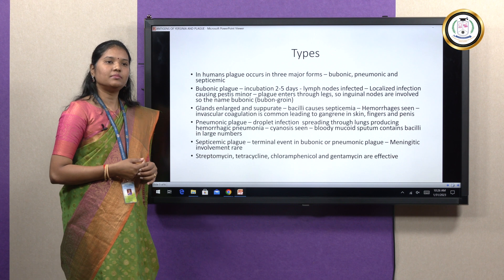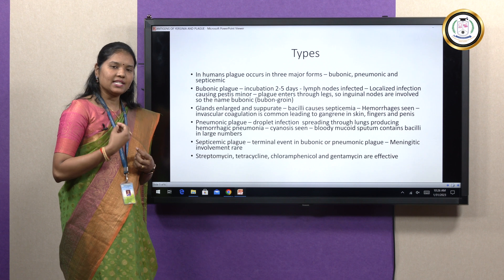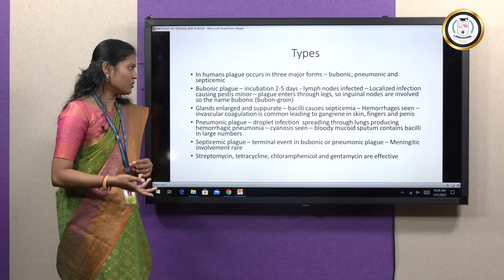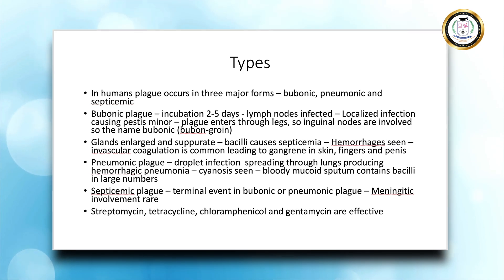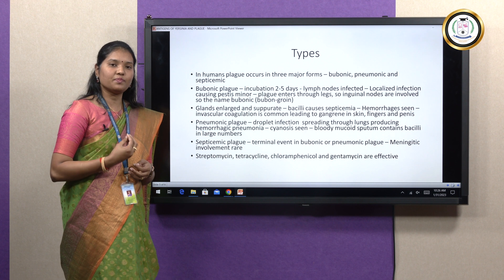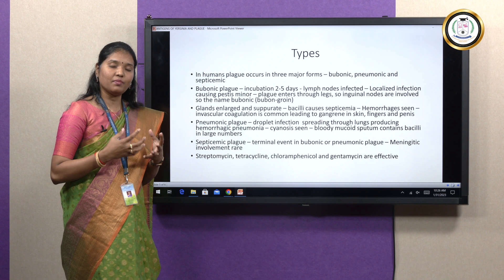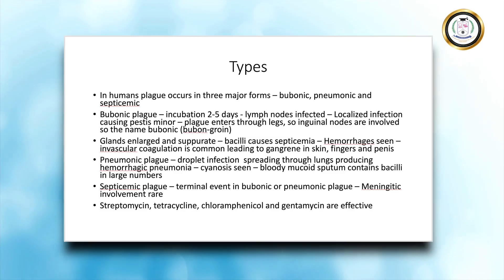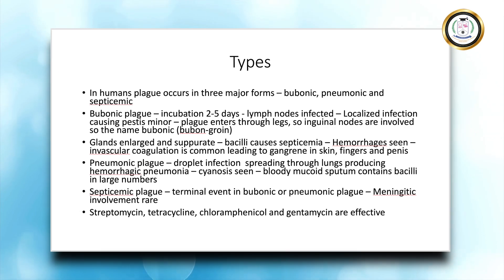Pneumonic plague spreads by droplet infection. As the name indicates, the bacilli enter the lungs and cause hemorrhagic lung abscesses, producing hemorrhagic pneumonia. Cyanosis — blue coloration of the organs — is very prominent. Bloody mucoid sputum is a special characteristic of pneumonic plague, and this sputum contains large numbers of bacilli. Generally, pneumonic plague follows bubonic plague and does not occur separately.